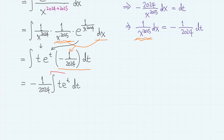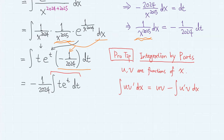And this part looks very familiar — this is one of the very basic examples of integration by parts. So using integration by parts with t as u and e to the power of t as v prime.